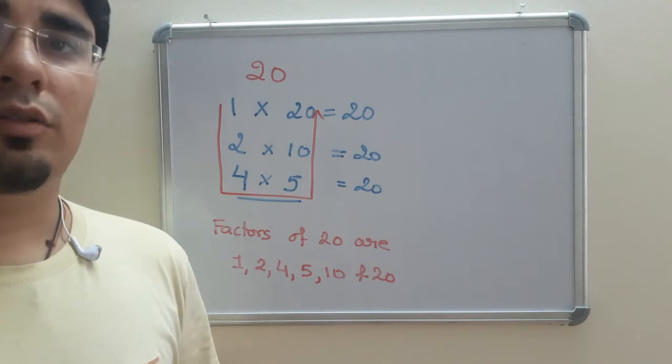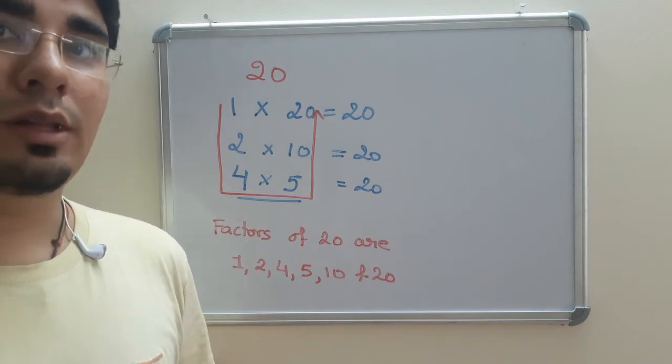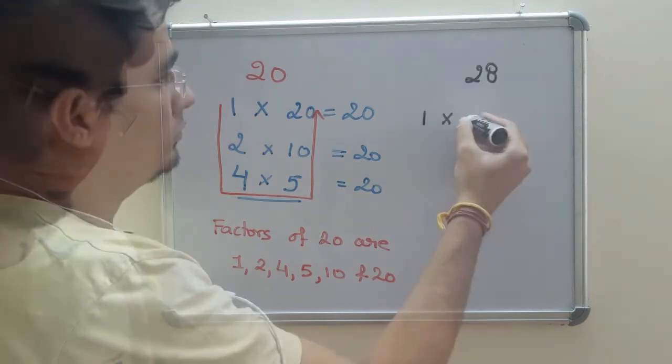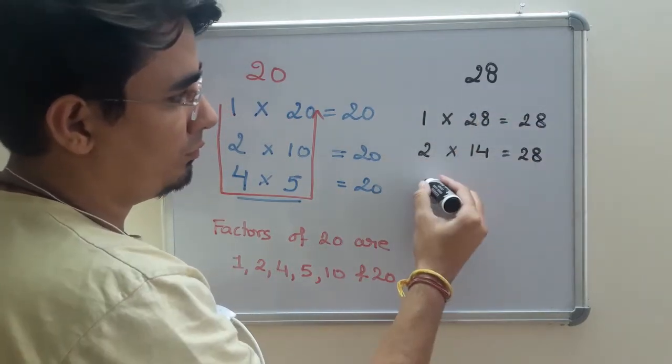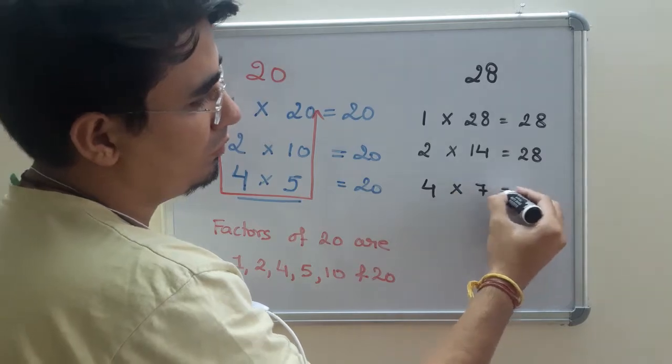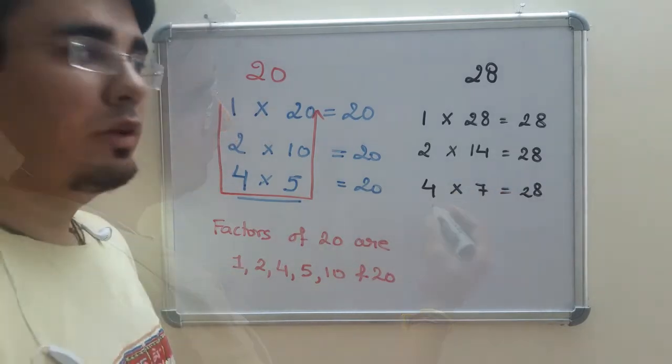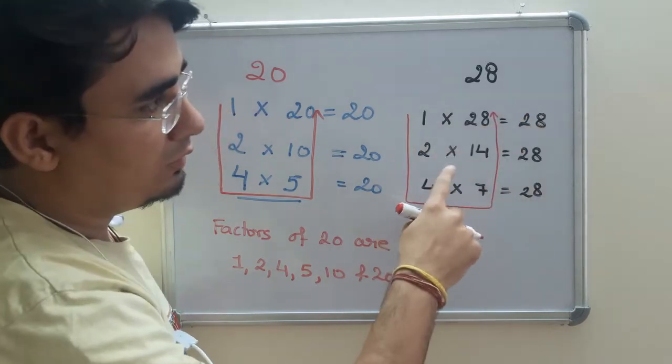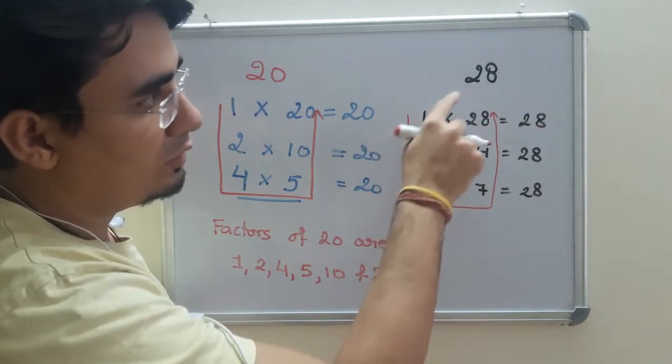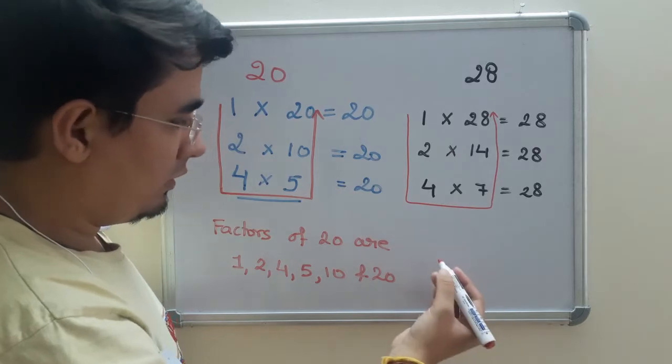Let us quickly see the factors of one more example that is 28. So as you can see, these are the only numbers which can divide 28.